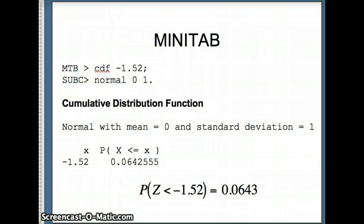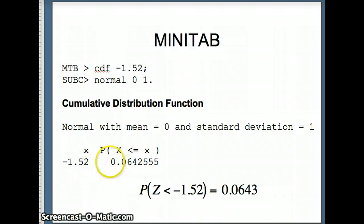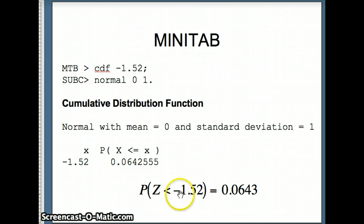You can also check that on Minitab using the CDF command, which stands for Cumulative Distribution Function. We say CDF negative 1.52, normal 0 1 — mean of 0, standard deviation of 1 — making it a standard normal. The output confirms: the probability X is less than or equal to negative 1.52 is 0.064255, or 0.0643. We use the letter Z to represent a standard normal distribution, so the probability Z is less than negative 1.52 is 0.0643.